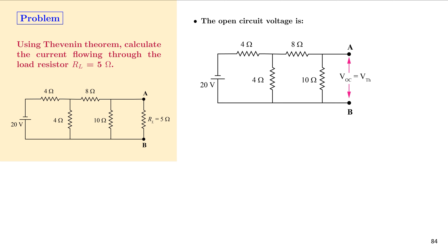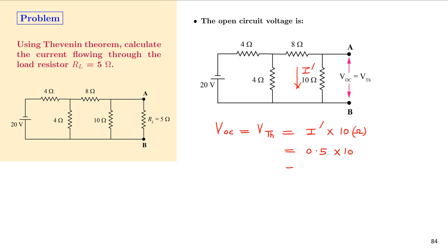Now we calculate the open-circuit voltage VOC, also equal to VTH. VOC equals the current through the 10 ohm resistor, I', multiplied by 10 ohms, which is 0.5 × 10 = 5 volts. This completes the first step in reducing the electrical network.